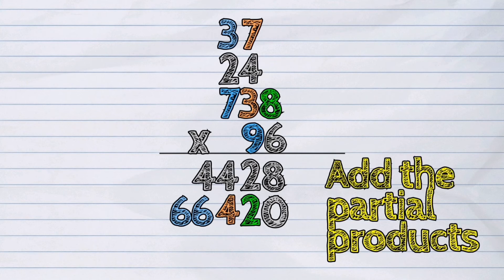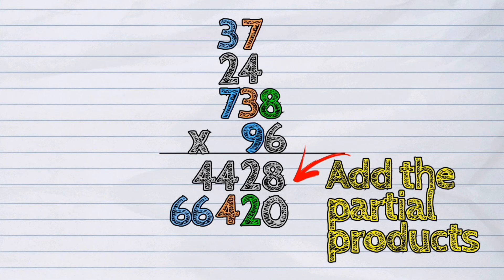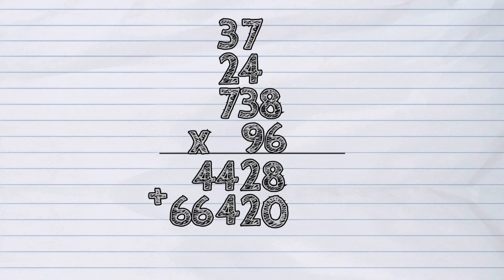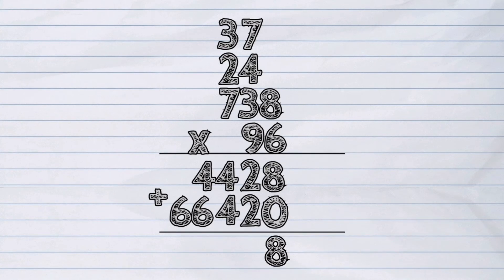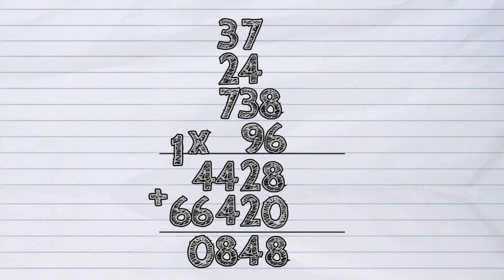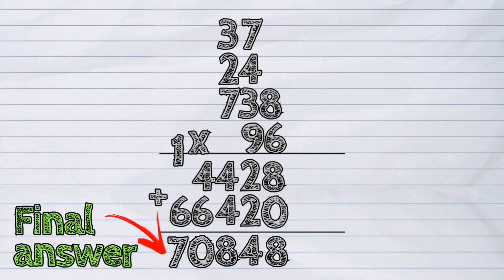Now, we are going to add the partial products to find the final result. 4,428 plus 66,420. 8 plus 0 is 8. 2 plus 2 is 4. 4 plus 4 is 8. 4 plus 6 is 10, and 6 plus 1 is 7. The final answer is 70,848.